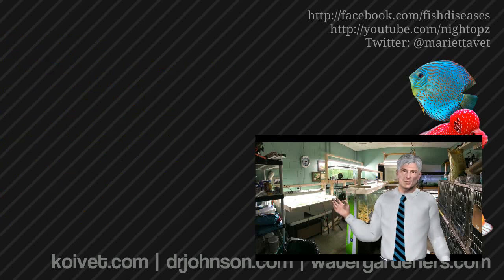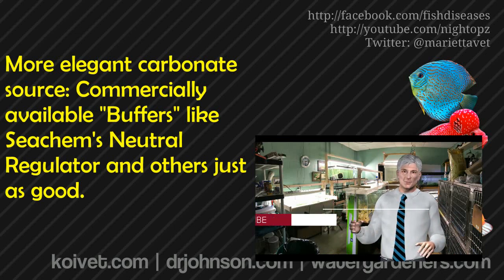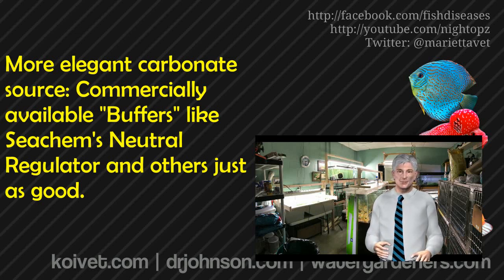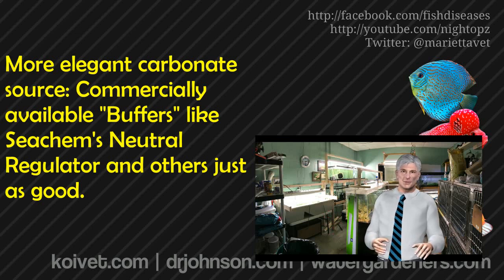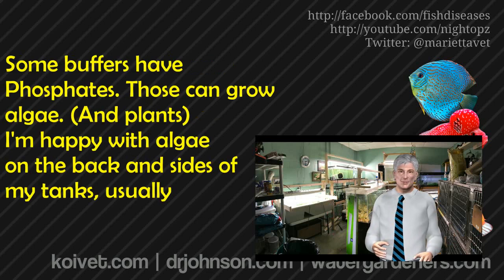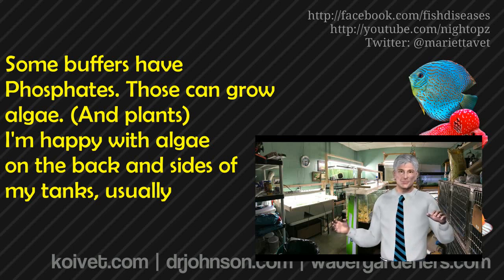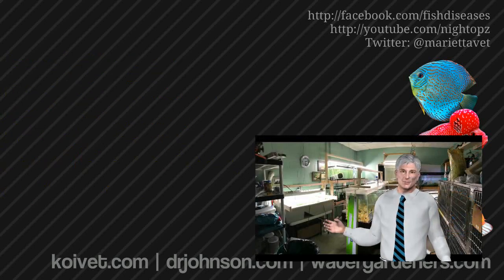In a fish tank, the best place to get carbonates is probably from a bottle of buffer — a neutral regulator. There are a variety of commercially available buffers that work very well. I personally prefer neutral regulator and have used it for many years. I don't mind that it has phosphates, because phosphates make the best buffers and they feed my algae — at least enough for the plecostomus to eat. Supplying carbonates to the system will stabilize the pH and keep it from falling under the pressure of carbon dioxide production forming carbonic acid.